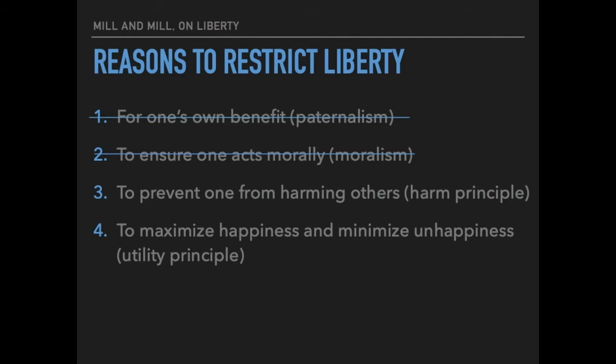The Mills think that the harm principle is a necessary condition, but not by itself sufficient, and the utility principle is not by itself adequate either. In order to restrict liberty, you need both: on one hand, you need the possibility of harm and you need to be preventing harm — so there are no restrictions on actions insofar as they only affect oneself. But even then, restrictions might do more harm than good, so the utility principle also has to be accounted for. Preventing harm is not by itself sufficient.